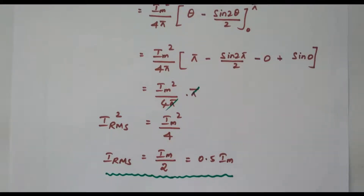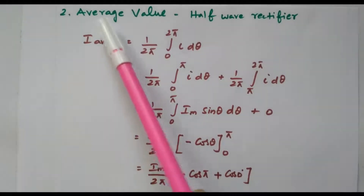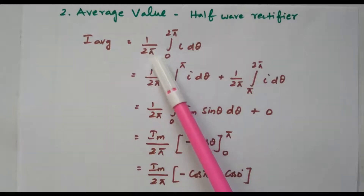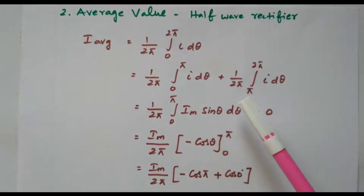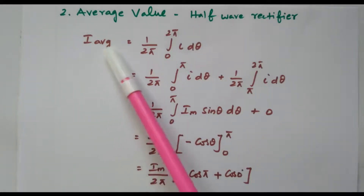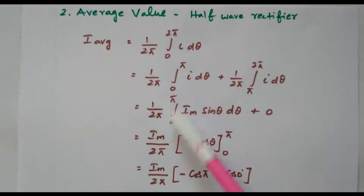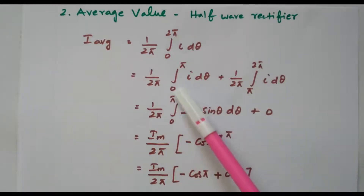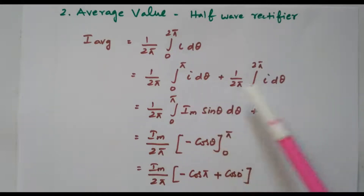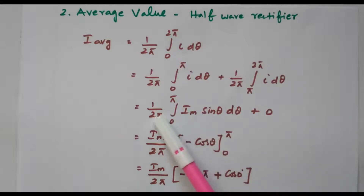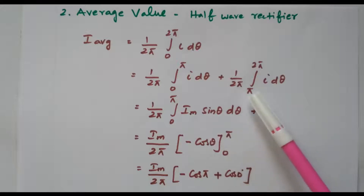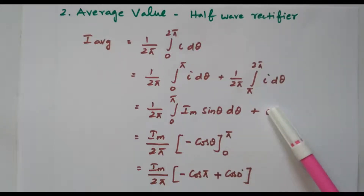Now we will see the average value of the half wave rectifier. The formula is: Iavg = (1/2π) ∫₀²π I dθ. Note that here there is no square, unlike the RMS formula. We split this into two parts: 0 to π and π to 2π. From π to 2π the current is not available, so that term becomes 0.